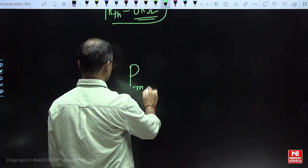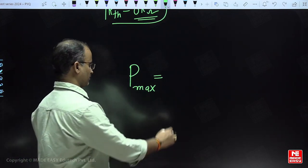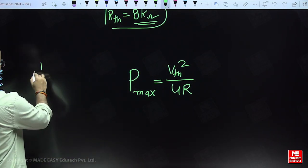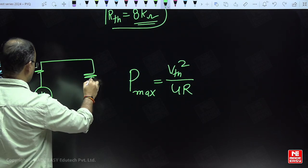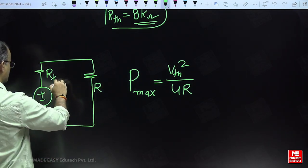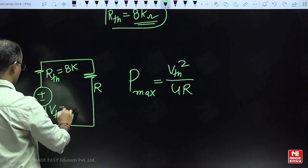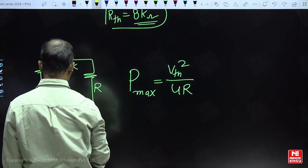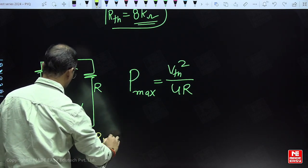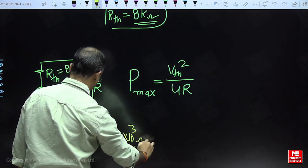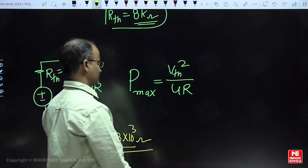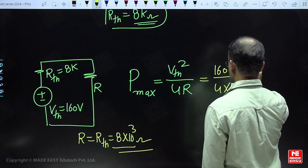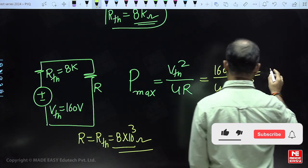Corresponding to the maximum power transfer theorem, the formula for maximum power is P equals V squared divided by 4R. The entire complex network is replaced by the equivalent circuit. Vth is equal to 160 volts and Rth is equal to 8 kΩ. With respect to the maximum power transfer theorem, the load resistance should always equal the source resistance. From these calculations, we can find out the maximum power.